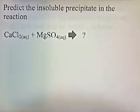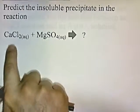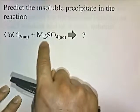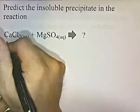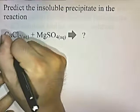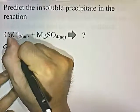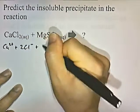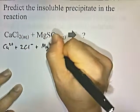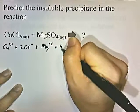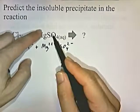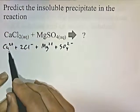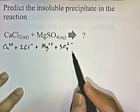Let's predict the insoluble precipitate in the reaction we just did — mixing a clear solution of calcium chloride with a clear solution of magnesium sulfate. First, we break these apart: CaCl2 becomes Ca2+ plus 2Cl−; and MgSO4 becomes Mg2+ plus SO4 2−.